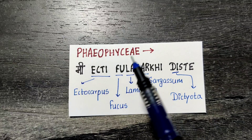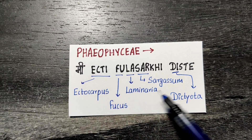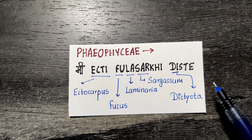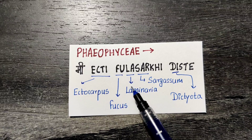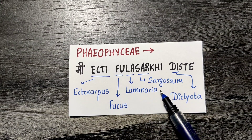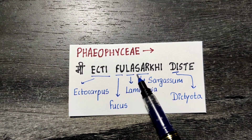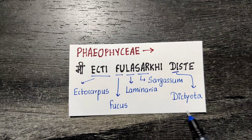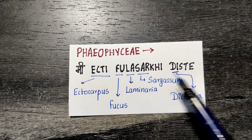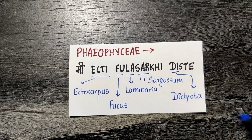Next, Phaeophyceae, which is basically brown algae. The sentence is 'me ekti fulla sarkhi dikhte': Ekti is Ectocarpus, Phu is Fucus, La is Laminaria, Sar is Sargassum — note that Sargassum appears in another phylum too but we use Sar here — and D gives us Dictyota. So Ectocarpus, Fucus, Laminaria, Sargassum, and Dictyota.